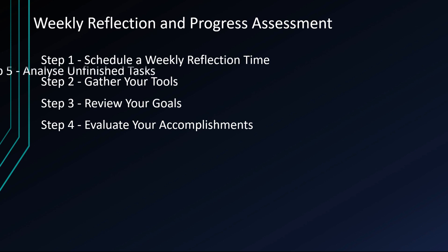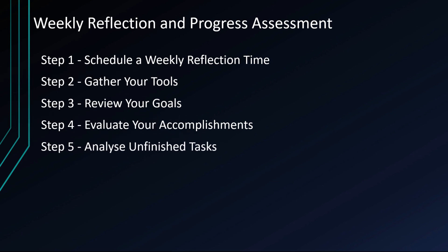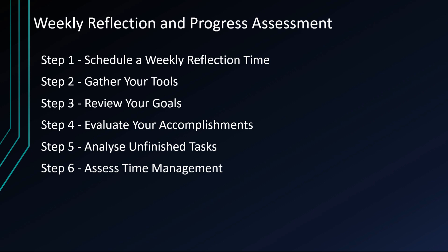Step 5: Analyze unfinished tasks. Identify any tasks or goals you didn't achieve and try to understand why they weren't completed. Were they too ambitious, or did unexpected priorities arise? This analysis can help you adjust your planning for the next week. Step 6: Assess time management. Reflect on your time management practices — were you efficient and focused during your work hours, or did you waste time on distractions? Consider what worked well and what didn't.